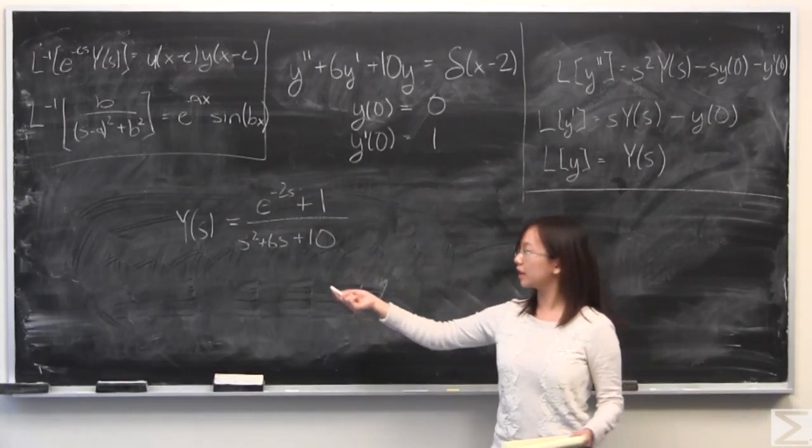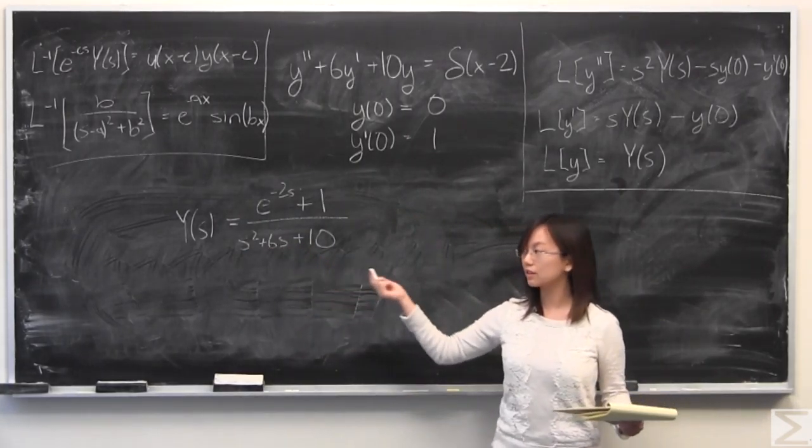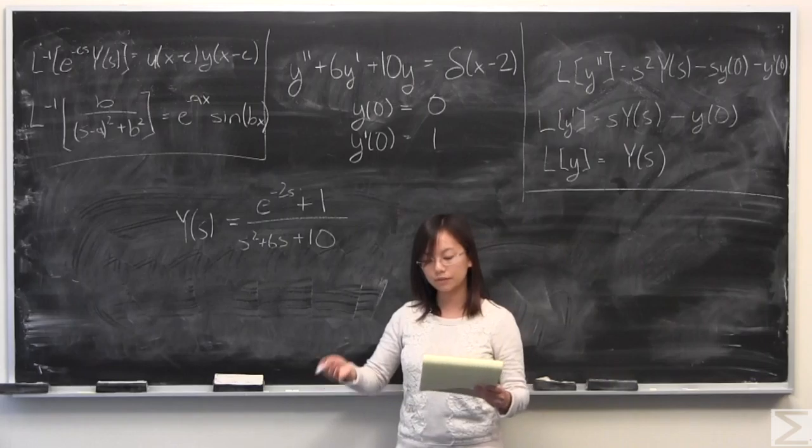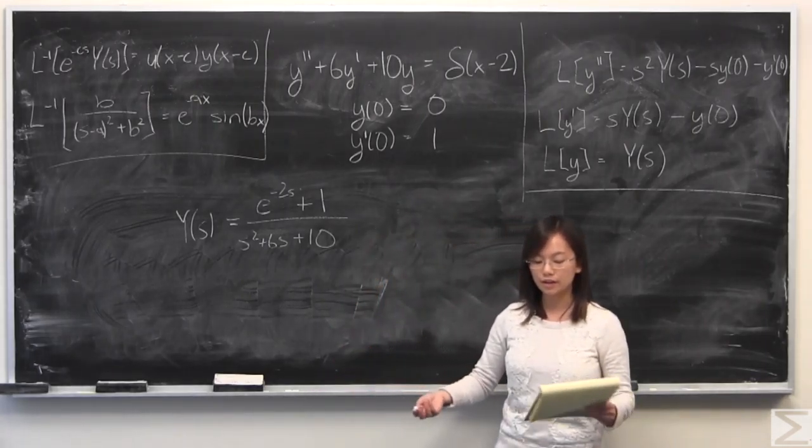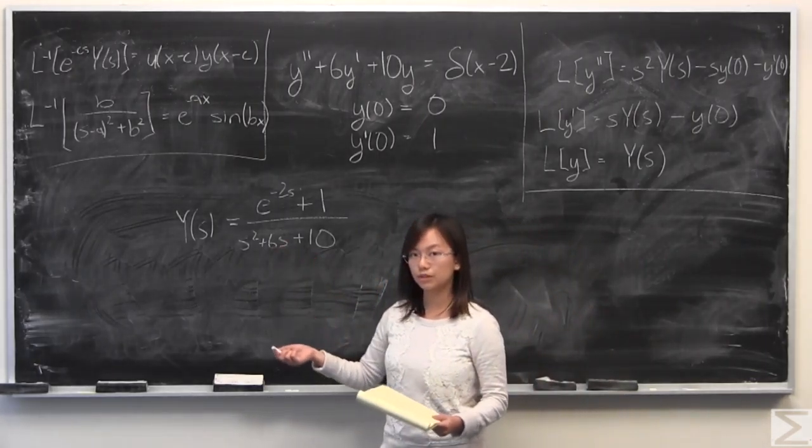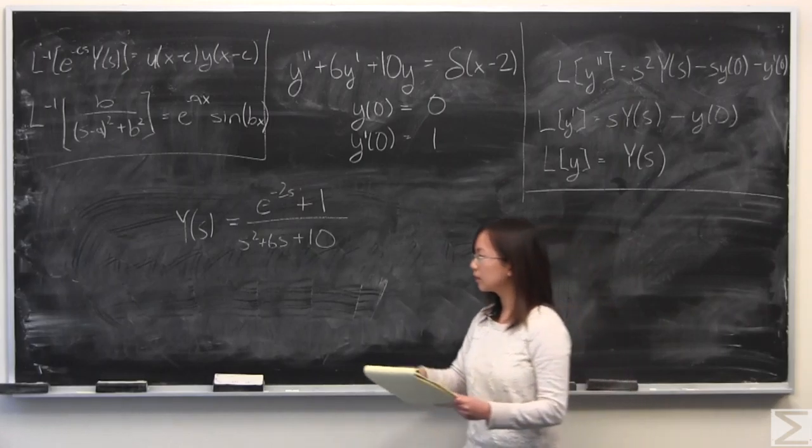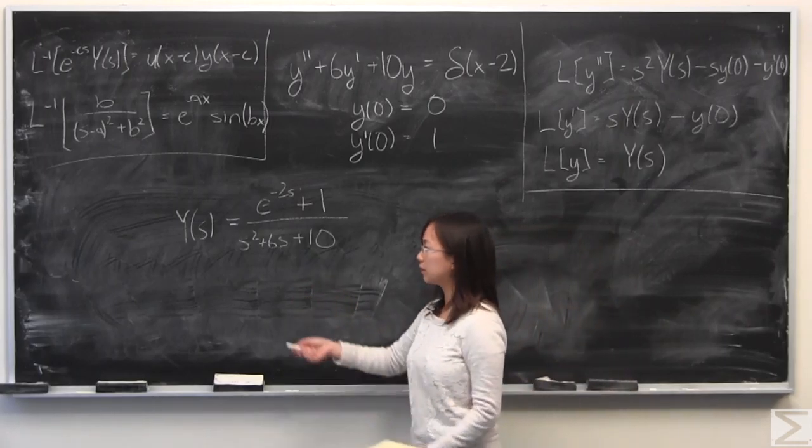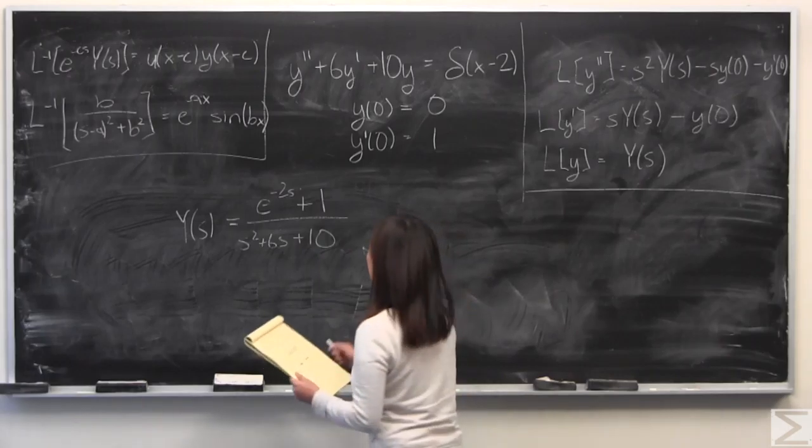So after rearranging some terms and dividing by this, you get this expression, and this can further be put into an easier thing to look at by noticing that there's a complete square in there, and we can take that out and then have a 1 left over, because s squared plus 6s plus 9 is a perfect square.